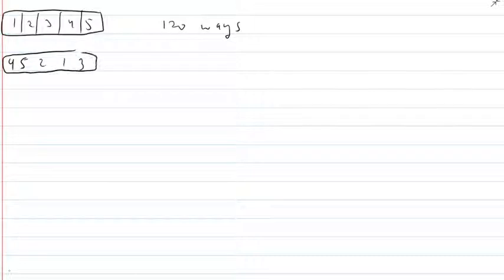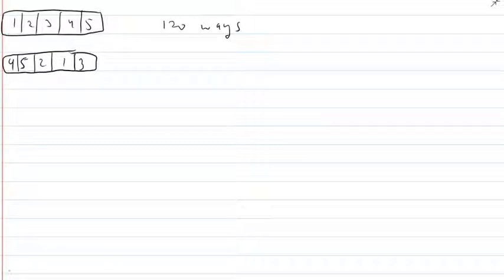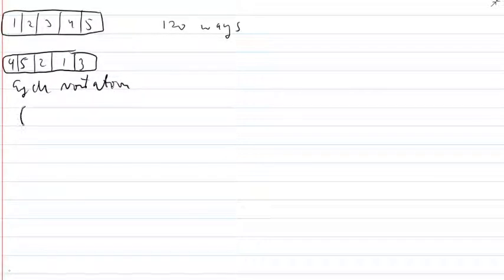So that is one of the 120 ways — 1, 2, 3, 4, 5 is one of them, and 4, 5, 2, 1, 3 is another way. One notation for describing this is called cycle notation, and it takes a little practice to get the hang of it. The way cycle notation works: any random shuffling of five things is a collection of what are known as cycles. The number 1 ends up in the fourth position, so I put a 1 here and then a 4 — that says number 1 goes to position 4.